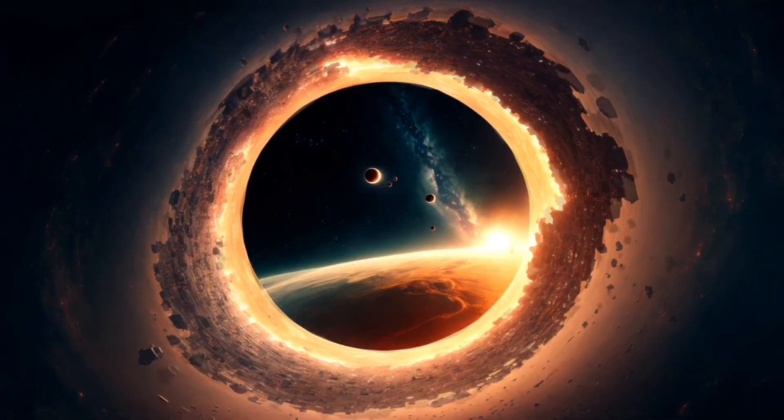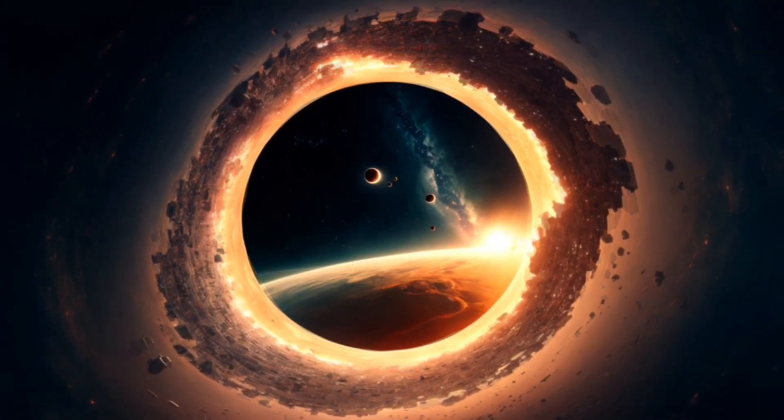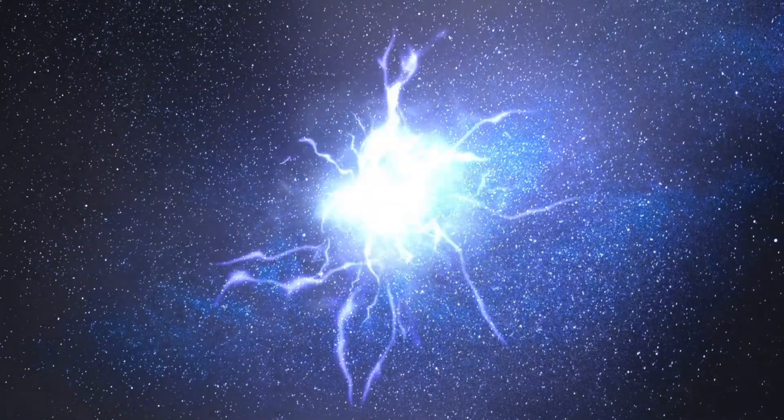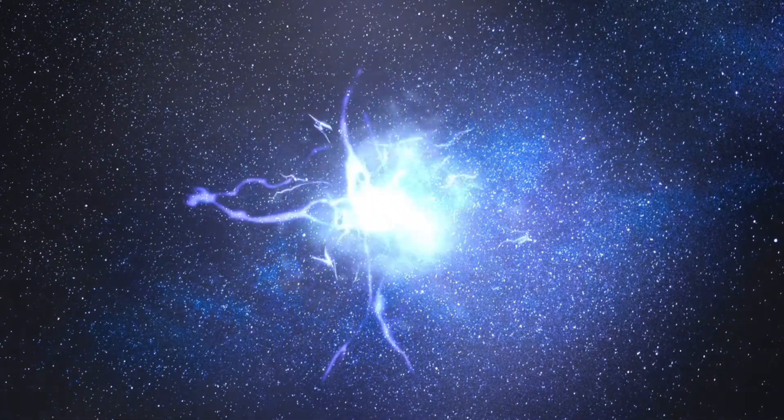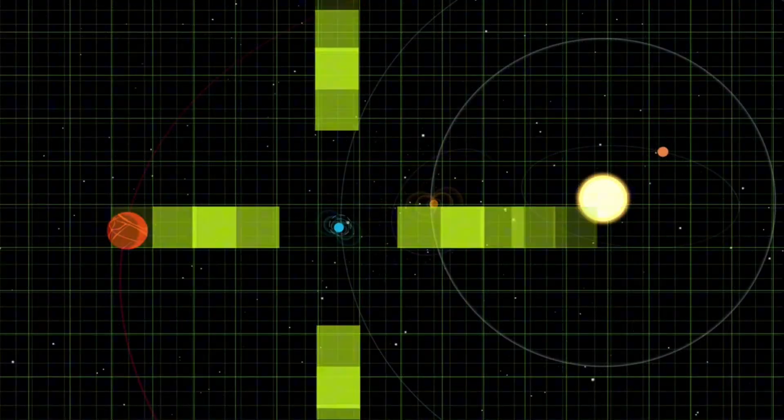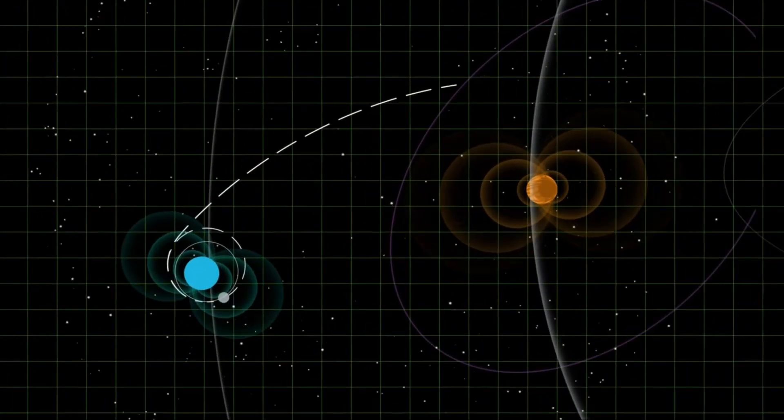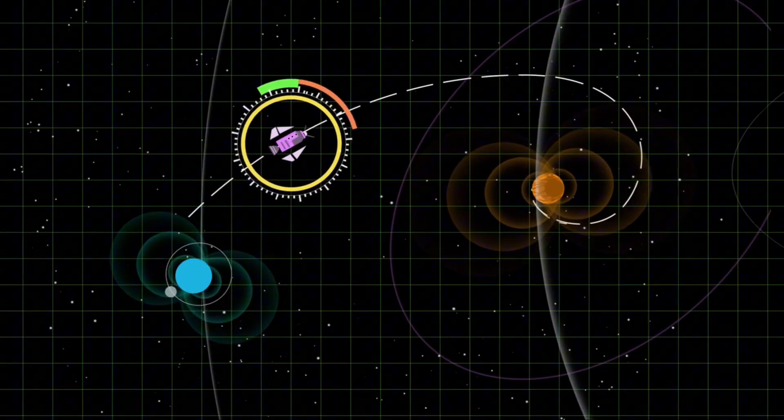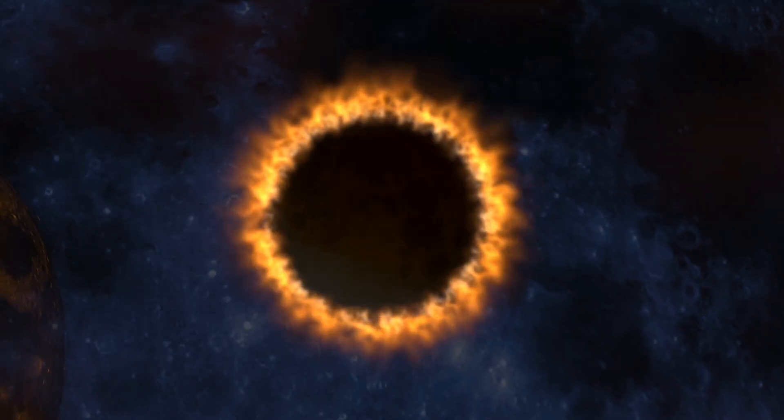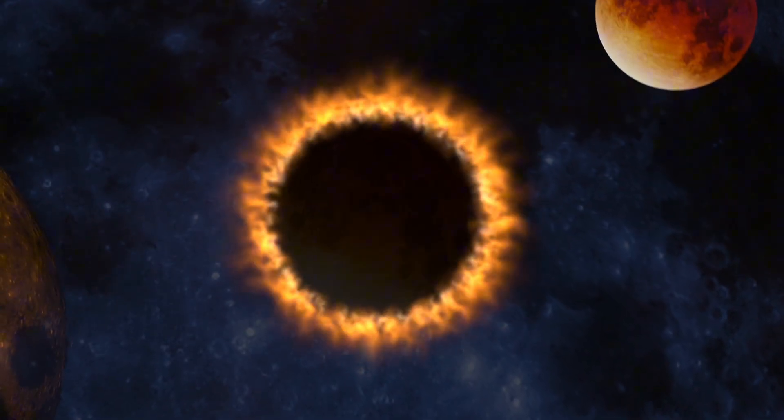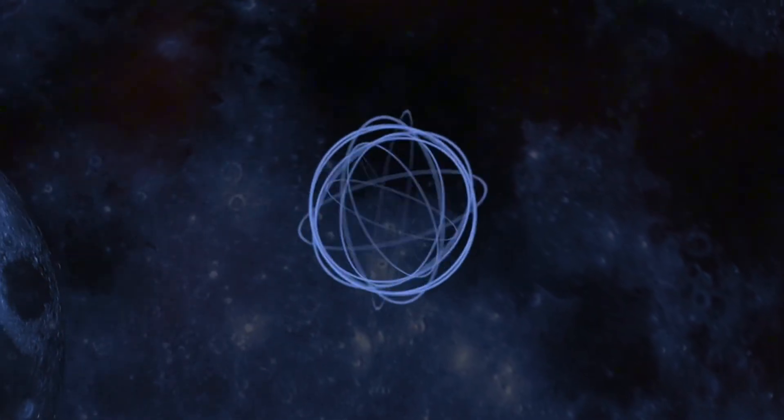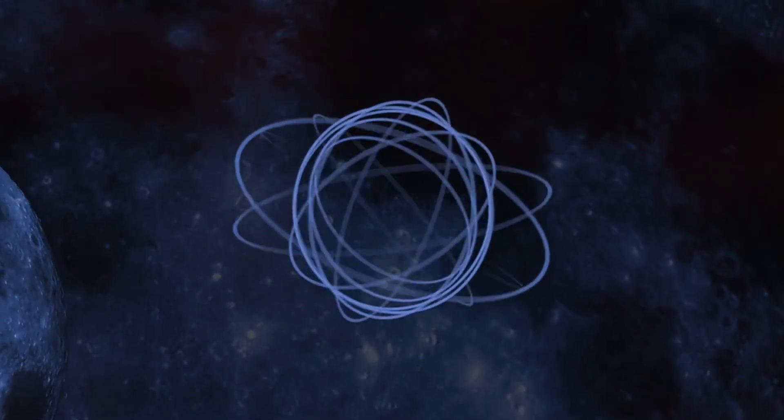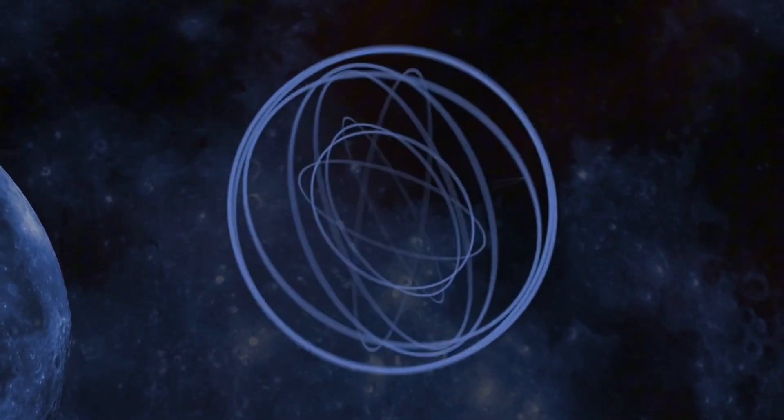The last time we saw a similar configuration was October 2003, the Halloween storms. Some of you remember those. Aurora visible as far south as Texas. Satellites damaged. Communications disrupted globally. We have better monitoring now, better prediction models, better infrastructure protection. But we also have more to lose. More satellites. More dependent systems. More infrastructure vulnerable to geomagnetic storms.